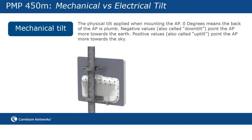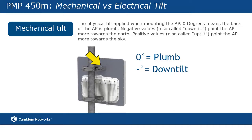Mechanical tilt refers to the physical tilt applied when mounting the AP. Zero degrees means the back of the AP is plumb. Negative values, also called down tilt, point the AP more towards the earth. Positive values, also called up tilt, point the AP towards the sky.